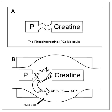Bioenergetic systems are metabolic processes that relate to the flow of energy in living organisms. Those processes convert energy into adenosine triphosphate, which is the form suitable for muscular activity.